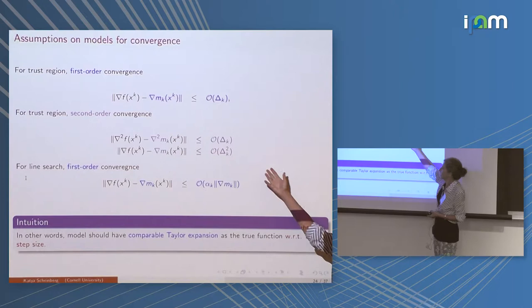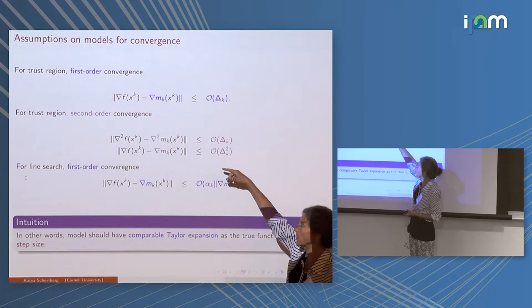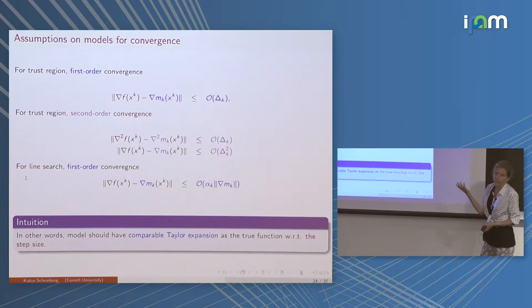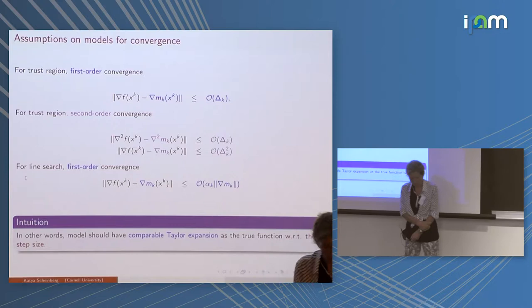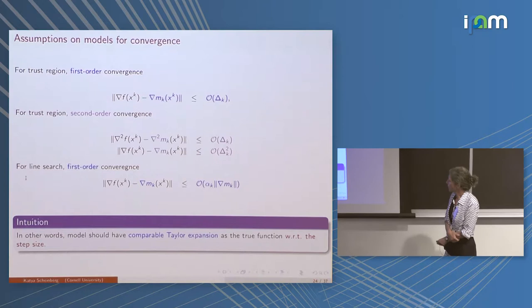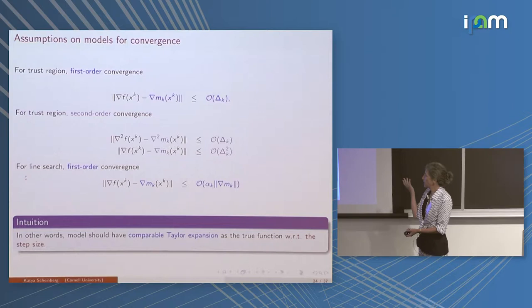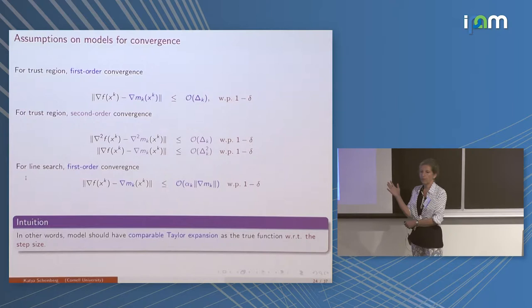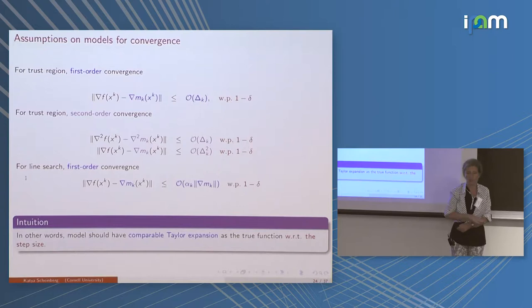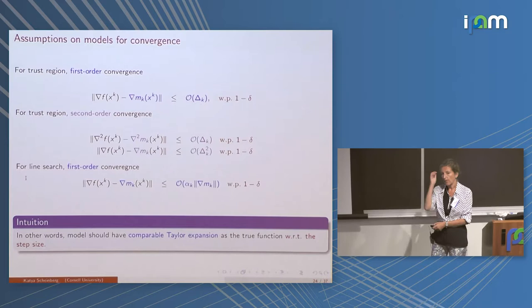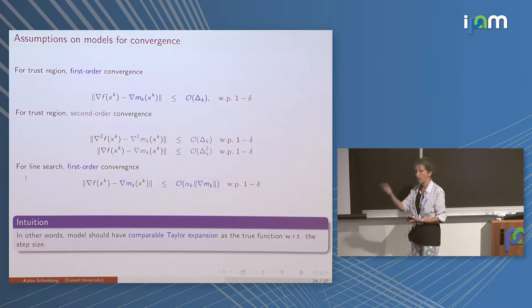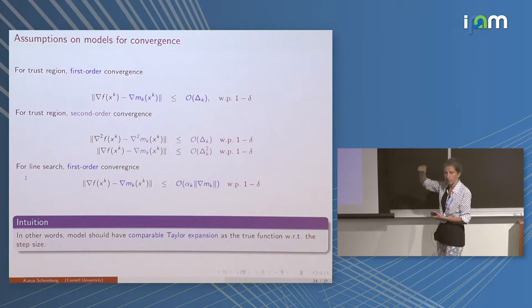If I cannot get more accurate information I just stop, which is still pretty good — I don't have enough information to progress further. For second-order information I need second-order model accuracy, like a Taylor series expansion up to second order; that's more expensive and takes more samples. The nice thing is that these statements just need to hold with some probability, which is important because many methods, especially with stochastic approximations, only guarantee things probabilistically.